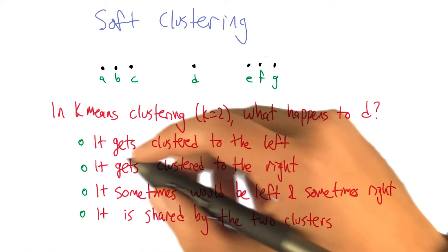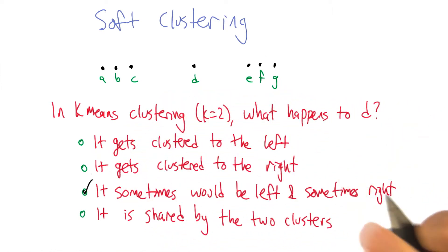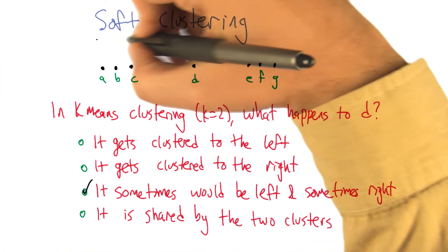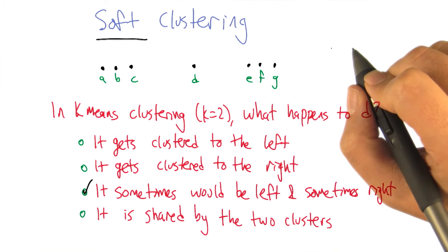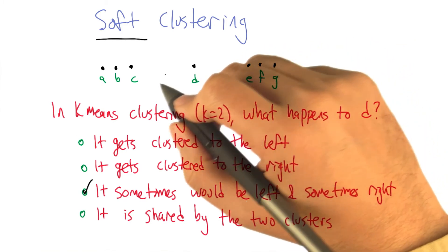But I'll say one thing. I wish it were the fourth choice. I would like to grant this wish by talking about the next clustering algorithm, which in particular does soft clustering. And soft clustering allows for the possibility that a point can be shared.